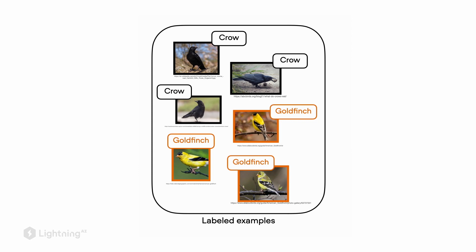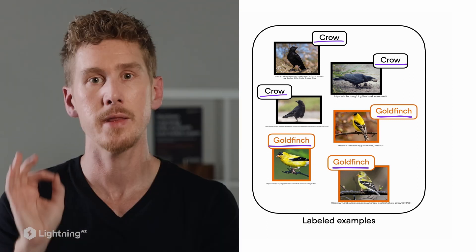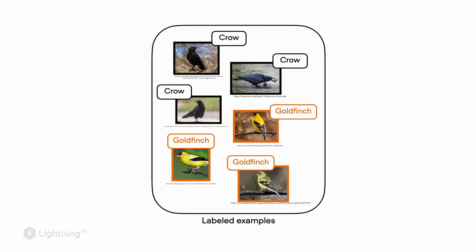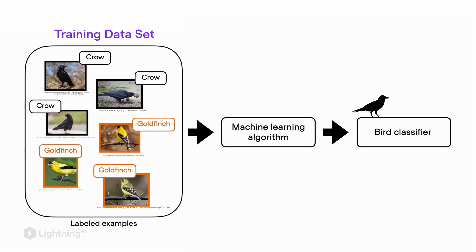Consider this simple example where we have pictures of birds. At the top, we see three pictures of crows, and at the bottom, we see three pictures of goldfinches. These images are labeled, which is very useful information for the machine learning model. This represents our training dataset that we provide to the machine learning algorithm, which will process this data and come up with a bird classifier — the end product of applying a machine learning algorithm to a training dataset.